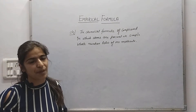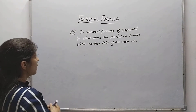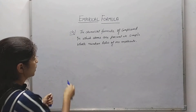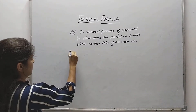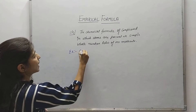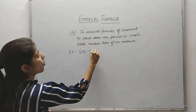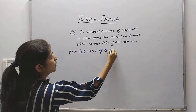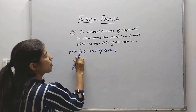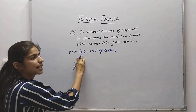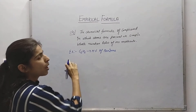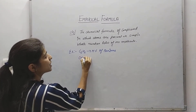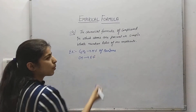Let's take one example of empirical formula. An example of empirical formula is C6H6, which is the molecular formula of benzene. Here the number of atoms are 6 and 6. So what do we do? We divide by 6, and it will become CH. This becomes the empirical formula.